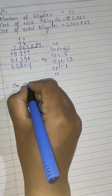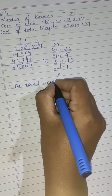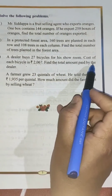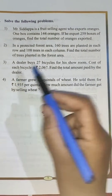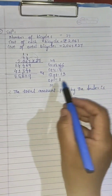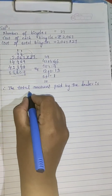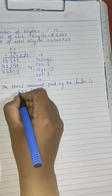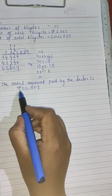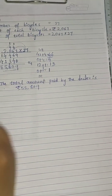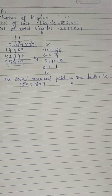Therefore, the total amount paid by the dealer is rupees 55,809. If they are asking about an amount, write the rupee symbol.